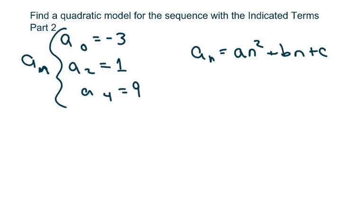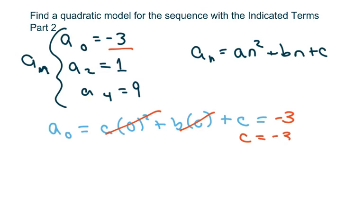So the first thing I'm going to do is just plug in my n's. So I have my n's are 0, 2, and 4. So I'm going to start with the first one. a sub 0 is a times 0 squared plus 0 times b plus c. And this all equals negative 3. So basically, this cancels and I get c equals negative 3.